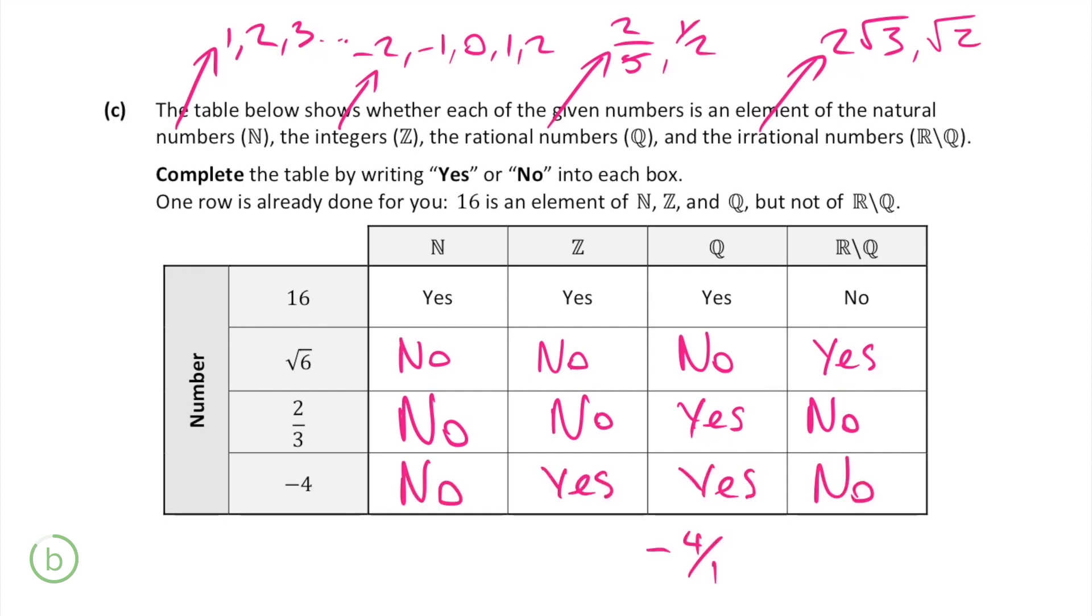The last number minus 4 is both an integer and a rational number since technically minus 4 can be written as minus 4 over 1. Now that we've filled out our table we get the last 10 marks going for the question.